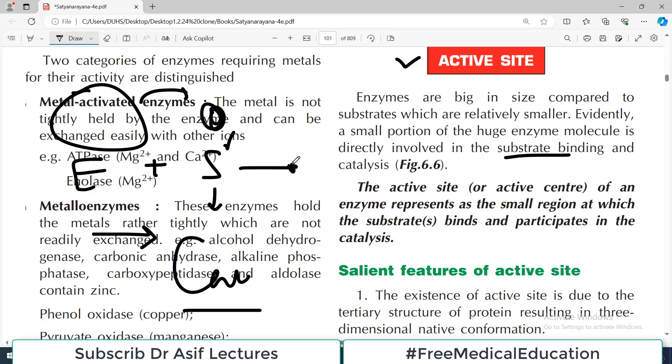A small portion of the huge enzyme molecule is directly involved in the substrate binding and the process of whatever reaction has to be carried out. The entire enzyme doesn't interact with the substrate - only the point that interacts with the substrate where the chemical reaction occurs is known as the active site. So the active site or active center of an enzyme represents the small region at which the substrate binds and participates in the catalysis.